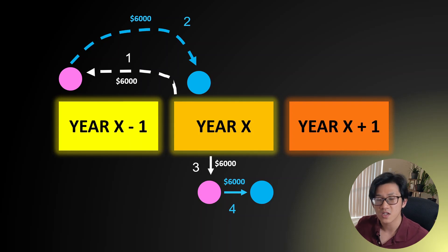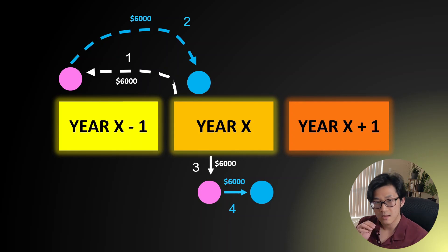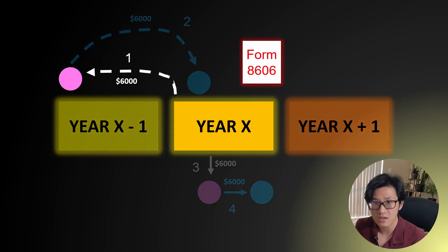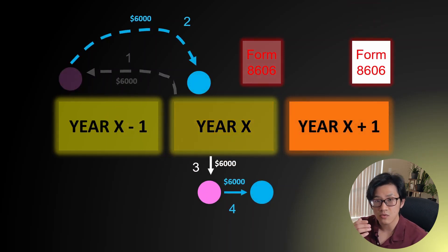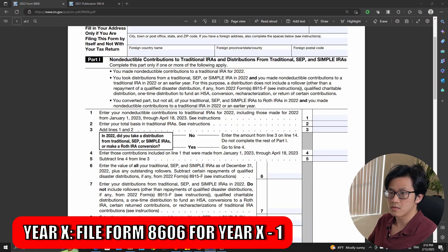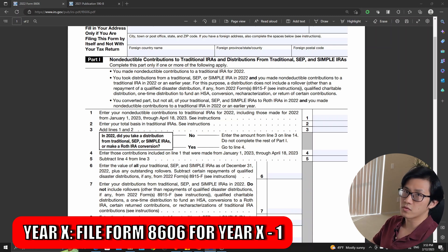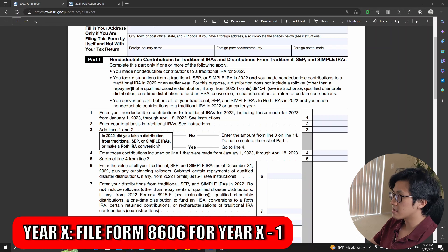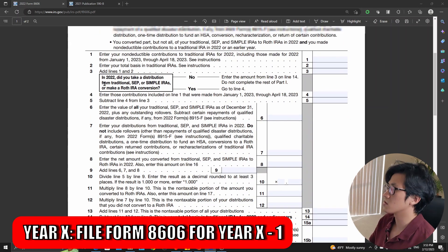In both backdoor Roth IRA conversions, let's assume you did not let the money in your traditional IRA grow in value. There will be two years where you need to file Form 8606. In year X, you need to report the late contributions to the traditional IRA. And in year X plus one, you need to report the remaining actions. Let's dive right in. In year X, you need to file taxes for year X minus one, so you need to report the late contributions to the traditional IRA. Here's Form 8606 — let's walk through it line by line.